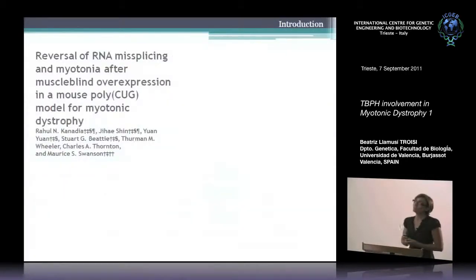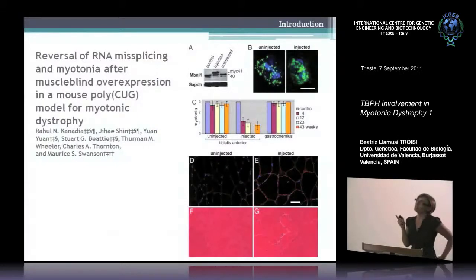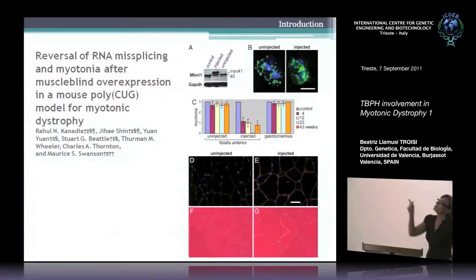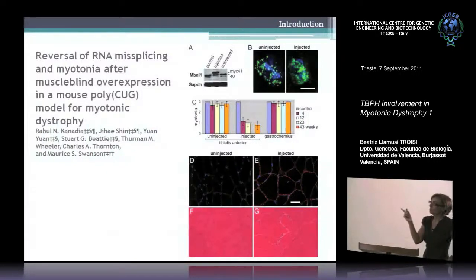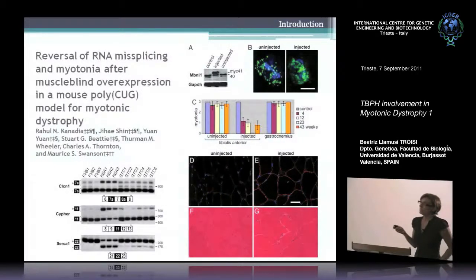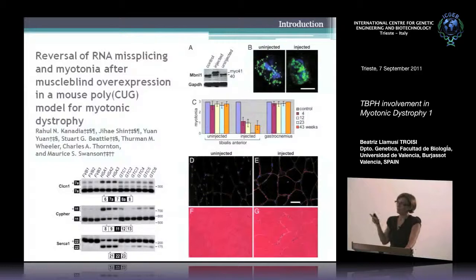Moreover, it has been shown that muscle-blind overexpression could be therapeutic, because muscle-blind expression in a mouse model of DM1 has been shown to rescue myotonia, histopathology, and chloride channel expression, and has been shown to repair some mis-splicing events.